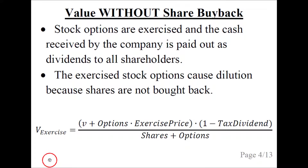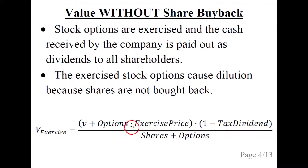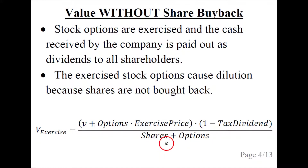The value without a share buyback, but with the stock options exercised, is denoted capital V subscript exercise. It is the V from before, plus the number of options times the exercise price. We have to take the dilution into account, so we divide it by shares plus options, instead of just shares.